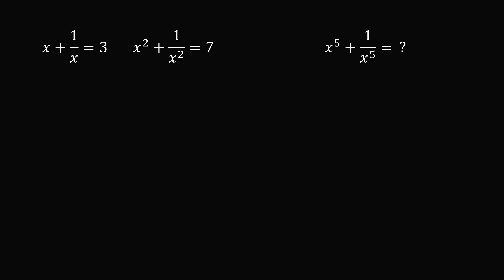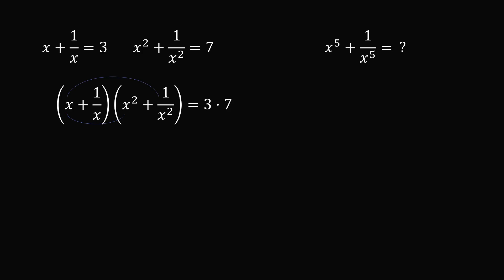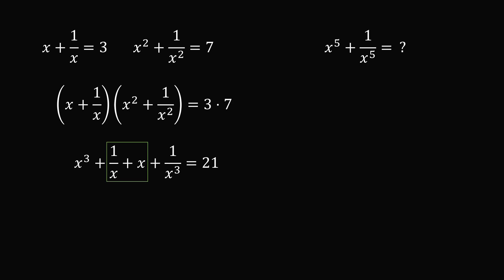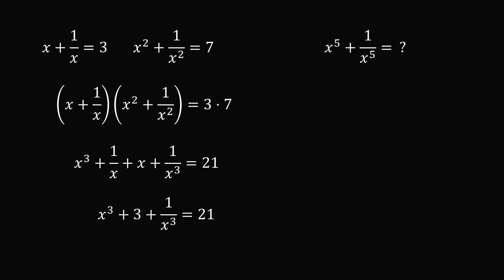Now let's try to solve for a higher power by multiplying these two equations together. Taking the product of x plus 1 over x and x squared plus 1 over x squared gives 3 times 7, which equals 21. Multiplying through and simplifying, we end up with x cubed plus 1 over x plus x plus 1 over x cubed equals 21. The middle two terms, 1 over x plus x, equal x plus 1 over x, which is 3. Substituting that in and subtracting 3 from both sides gives x cubed plus 1 over x cubed equals 18.